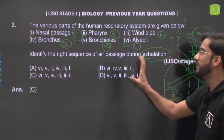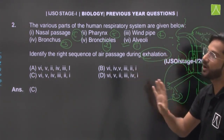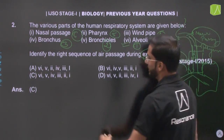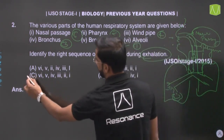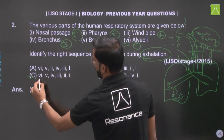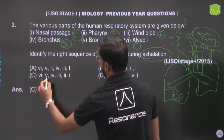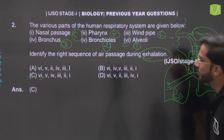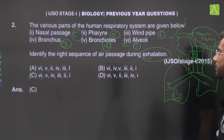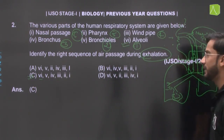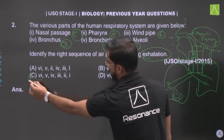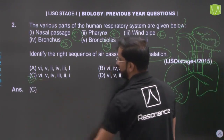Looking at the options to find which sequence is correct — Option C is correct: alveoli, bronchioles, bronchi, windpipe, pharynx, and nasal passage. This means Option C is the correct answer.